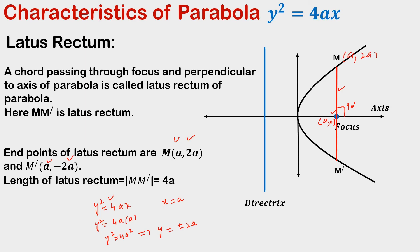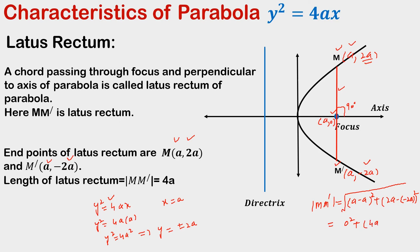Therefore the coordinates of M are (a, 2a), since it is in the first quadrant, and the coordinates of M' are (a, -2a), since M' is in the fourth quadrant. Finding the distance between M and M' using the distance formula gives √((2a - (-2a))²) = √(4a)² = 4a. Therefore the length of the latus rectum is 4a.